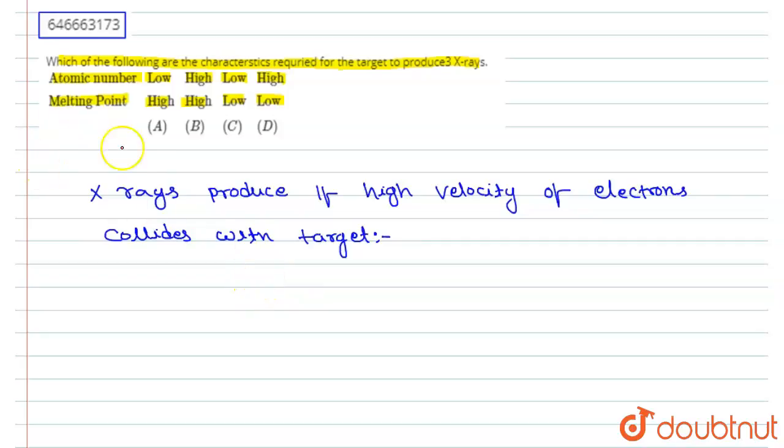Now we have to see about the atomic number and the melting point. So atomic number should be high and the melting point also should be high. Melting point also should be high.